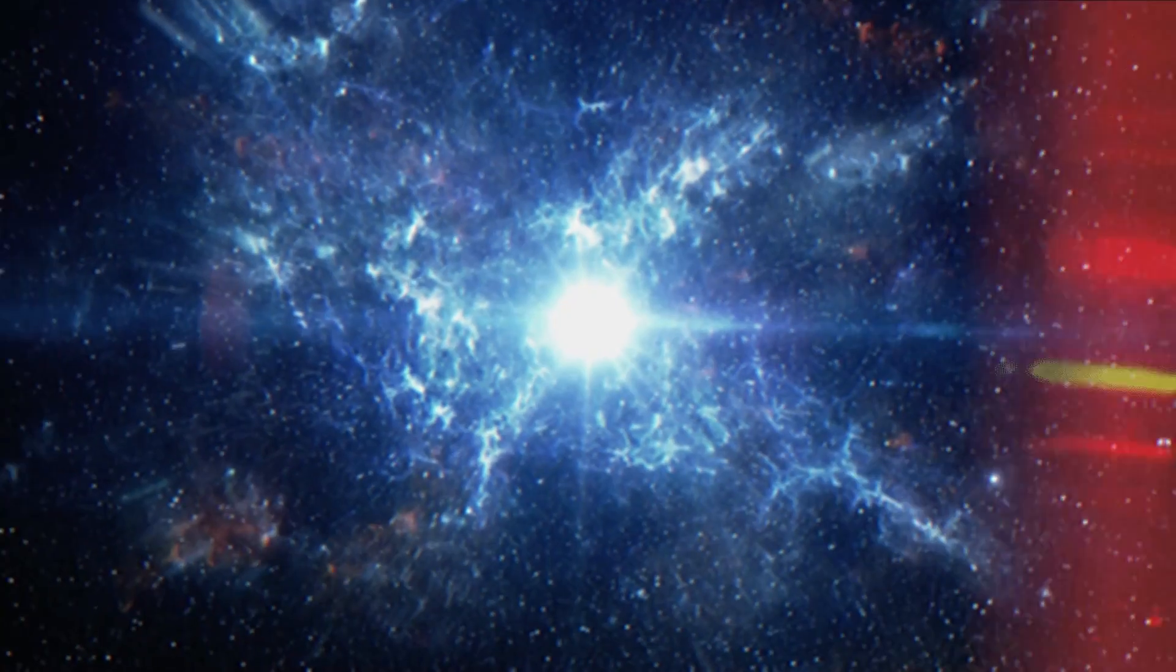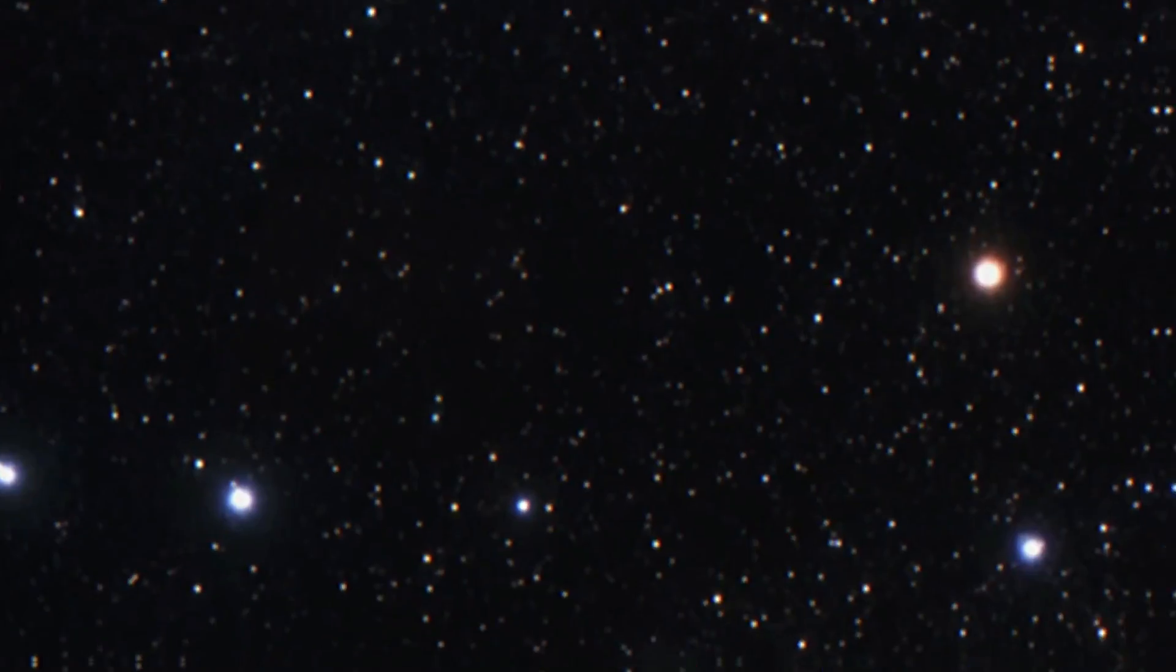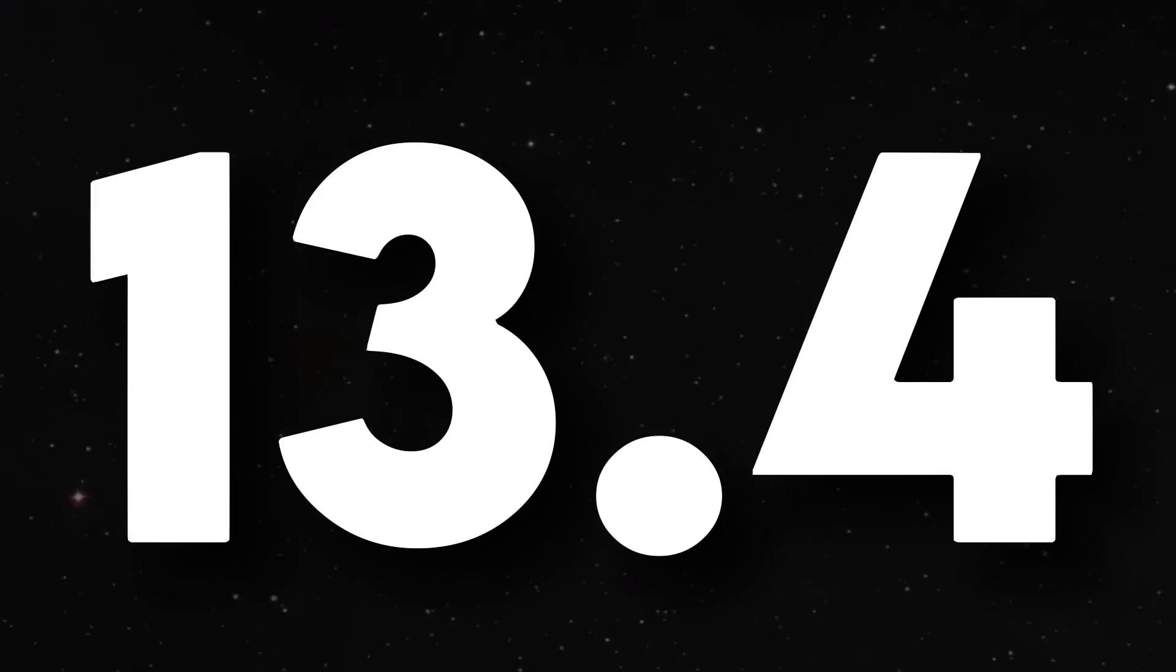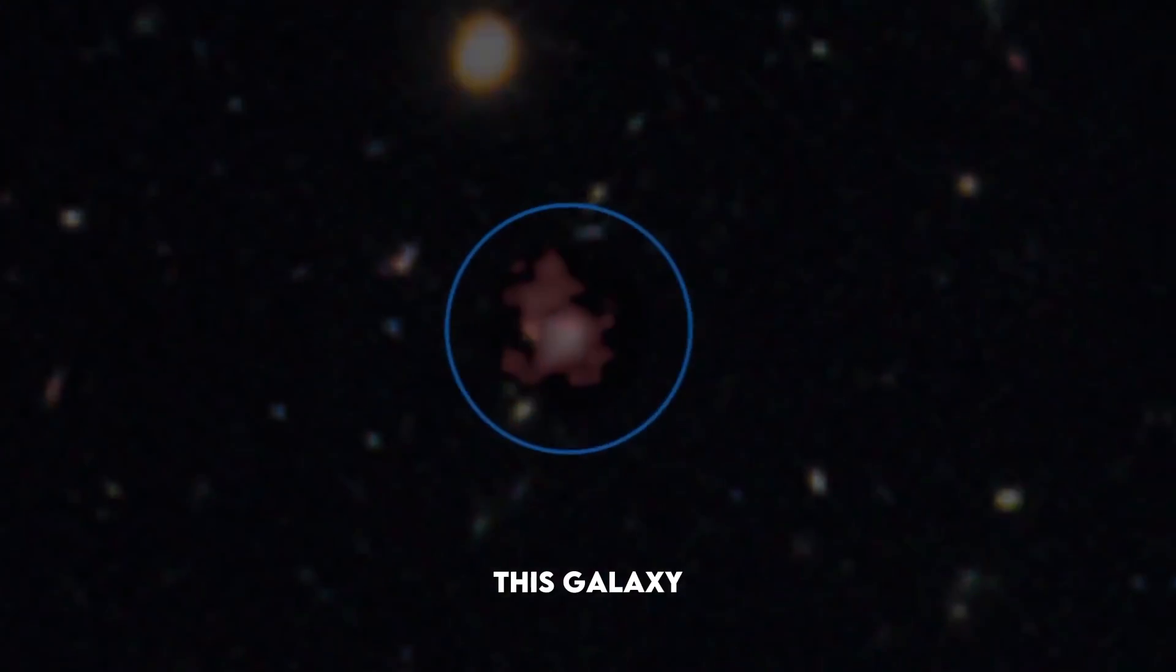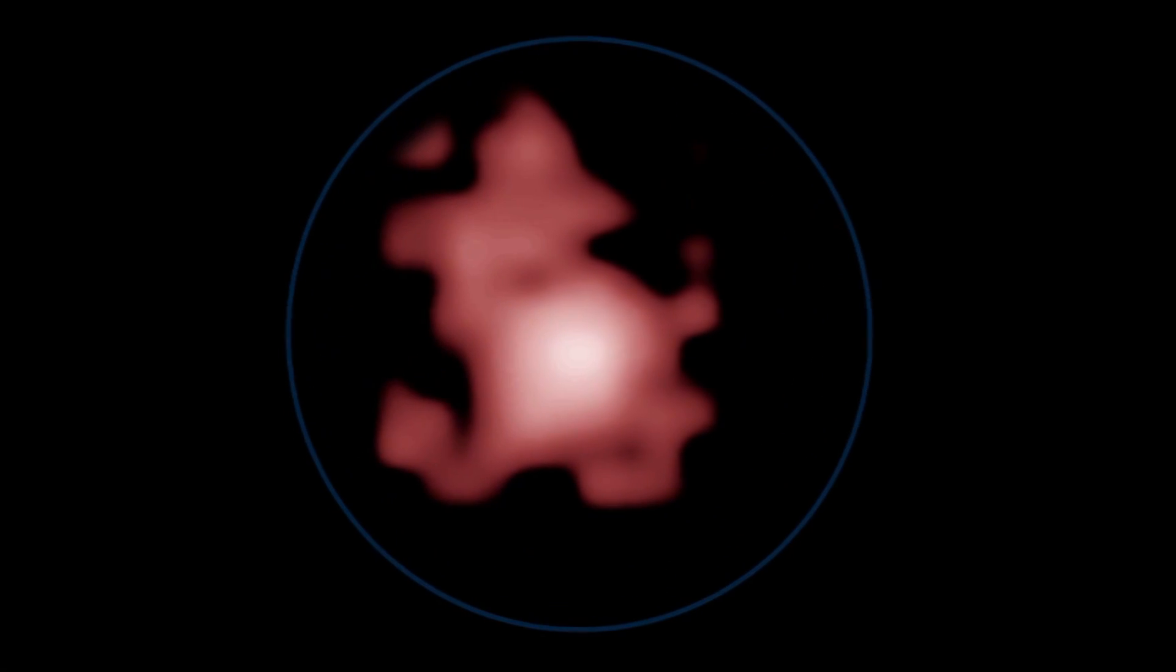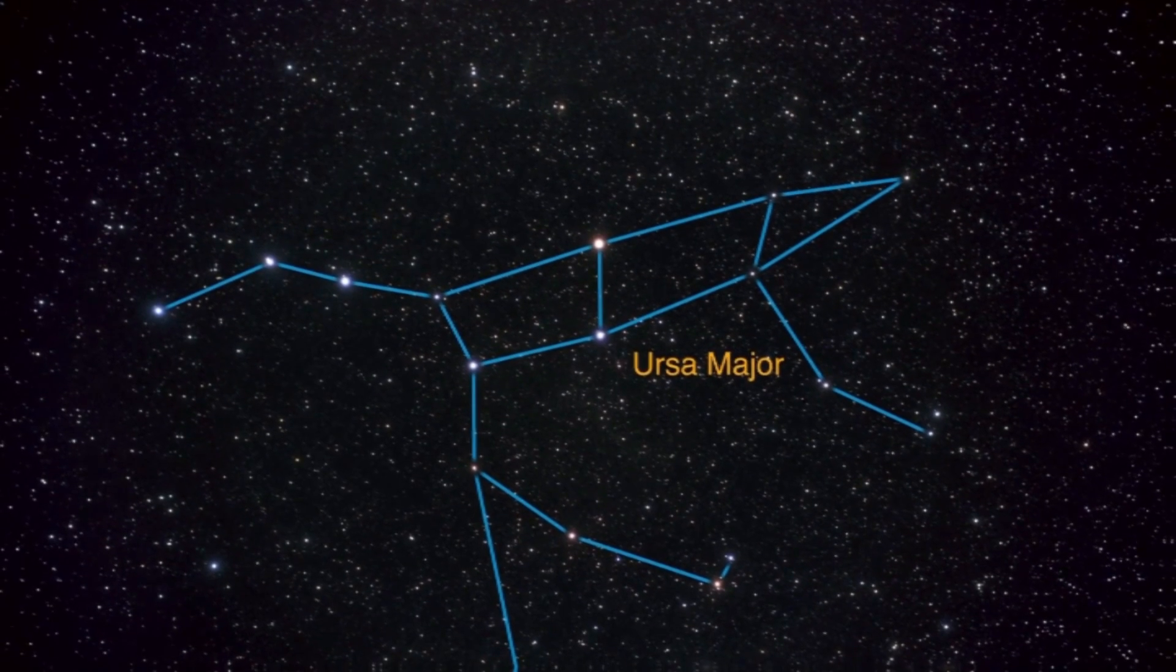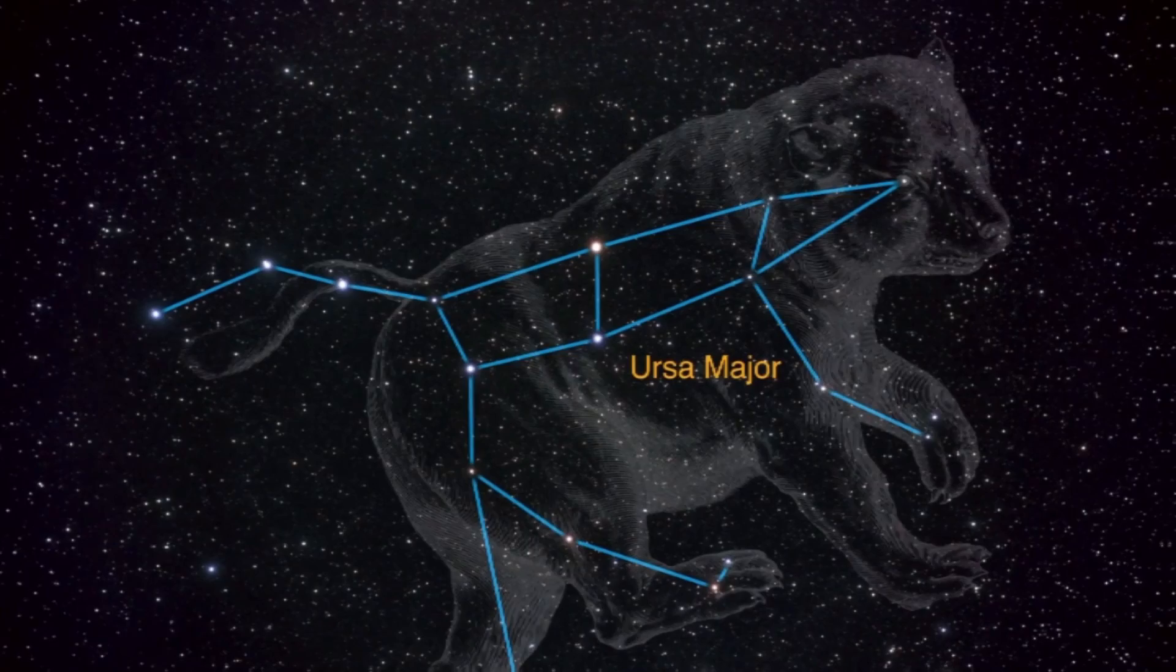In 2015, astronomers made an incredible discovery that pushed the limits of our understanding of the universe. They found a galaxy so far away from us that it existed 13.4 billion years ago, just 400 million years after the Big Bang. This galaxy, known as GN-Z11, is located in the constellation Ursa Major, and it's truly a sight to behold.